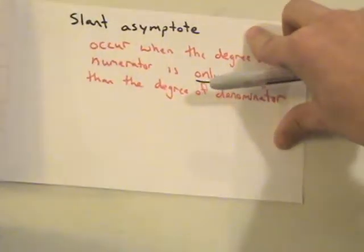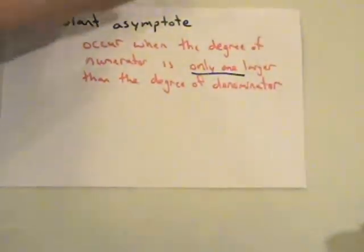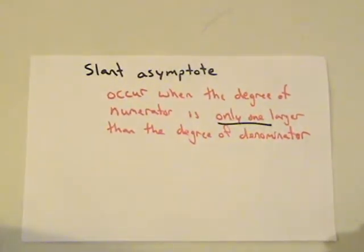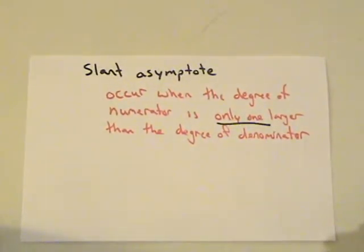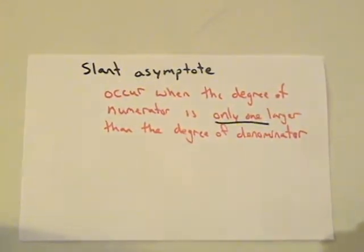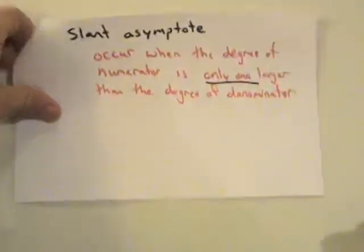I'll also be talking about horizontal and slant asymptotes and showing which ones are which. Slant asymptotes are a little more confusing — they occur when the degree of the numerator is only one, just one, larger than the degree of the denominator. Horizontal asymptotes are when we get a limit that equals a number, and that's just a horizontal line.